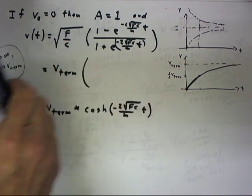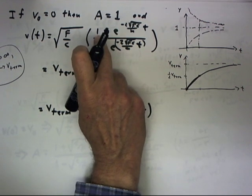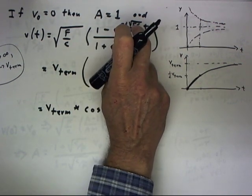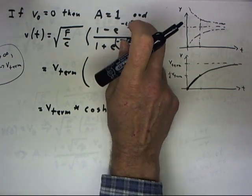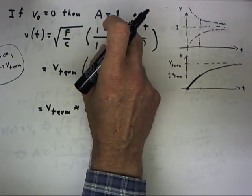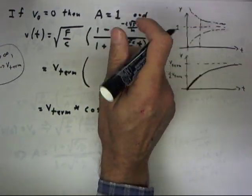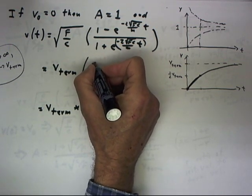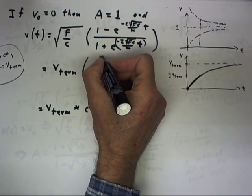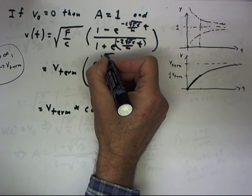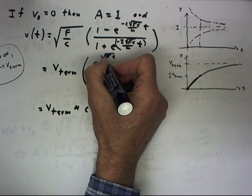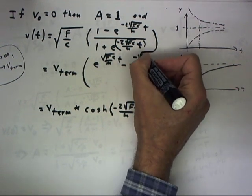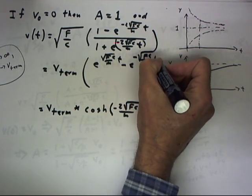Now I'm going to do an intermediate rearrangement. I'll multiply both the numerator and the denominator by e to the square root of fc over m times t. I'm not going to write that out step by step — just the result. It should be fairly easy to see that this gives us e to the square root of fc over m times t, minus e to the negative square root of fc over m times t.